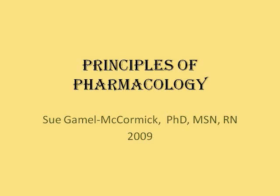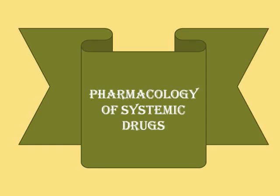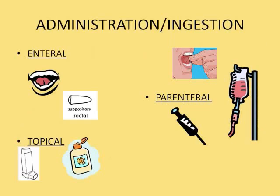In this video we're going to be talking about the pharmacology of systemic medication. Drugs can be administered or ingested by various routes. They can go in enterally, which means through the GI system — either by mouth or in some cases rectally. Some rectal suppositories have systemic action, for instance ones that are used for nausea.